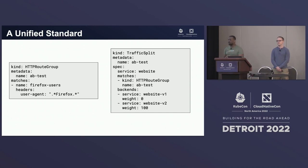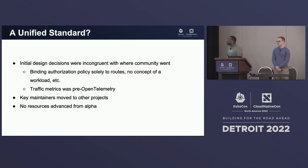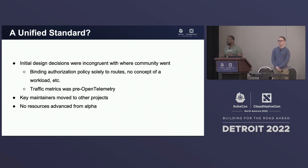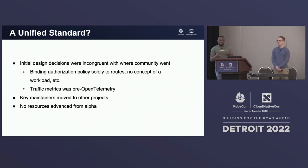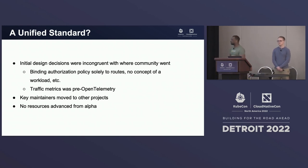SMI took off. Linkerd implements a couple of SMI resources. Open Service Mesh implements a lot of the SMI spec. Things were pretty good. But over time, we started to see some cracks in the foundation. SMI, because of where it started, made some design decisions in its specifications that were incongruent with where the community decided to go overall when it comes to routing resources.